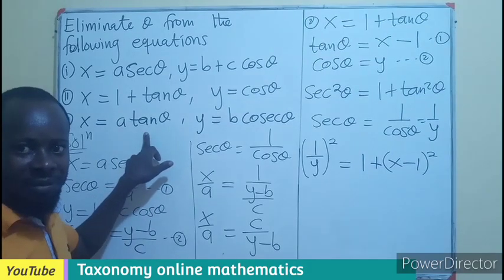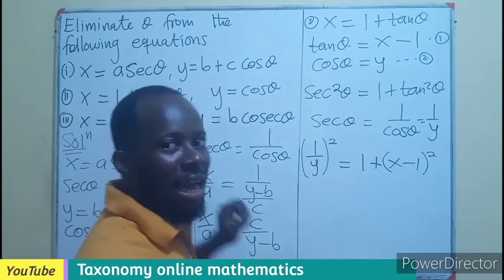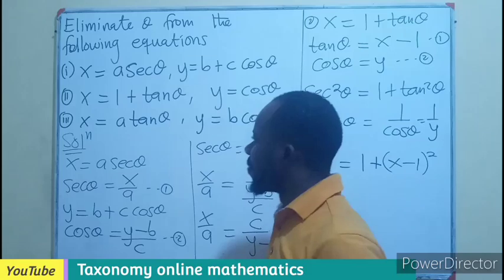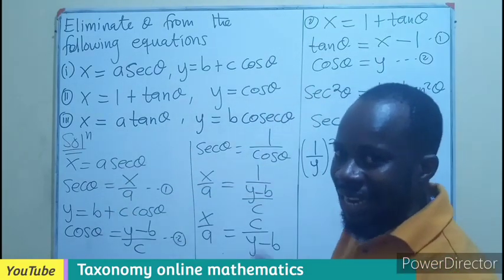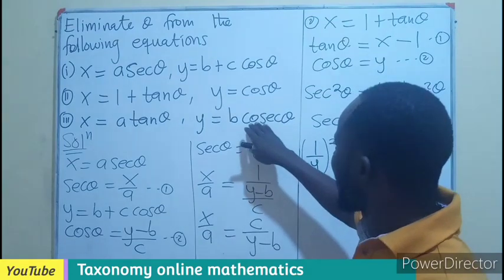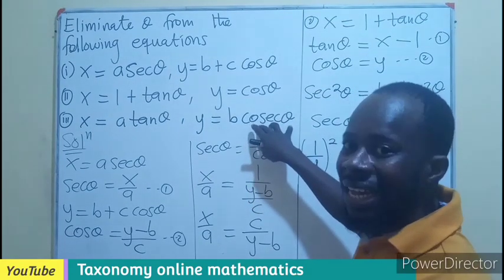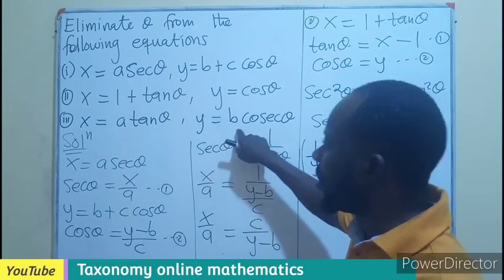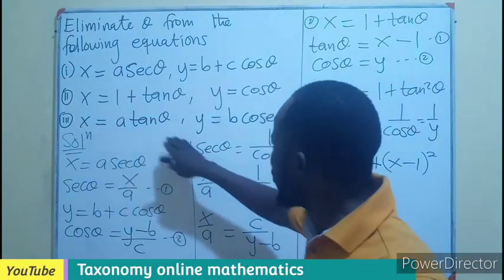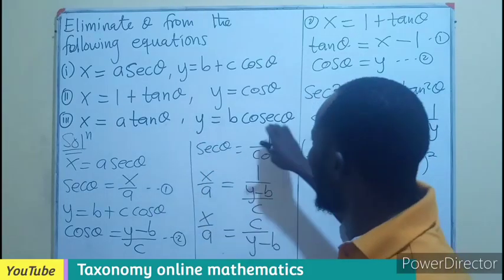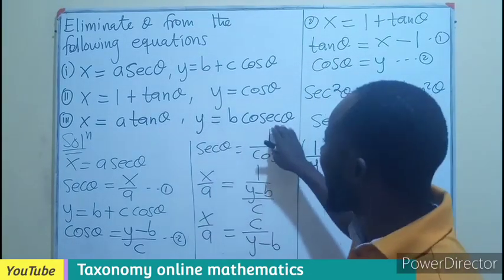Looking at this, I'm sure if I leave this behind for you to try, you will be able to provide answer to that. Making tan theta the subject, making cosec theta the subject. This is going to be Y over B, X over A, right?